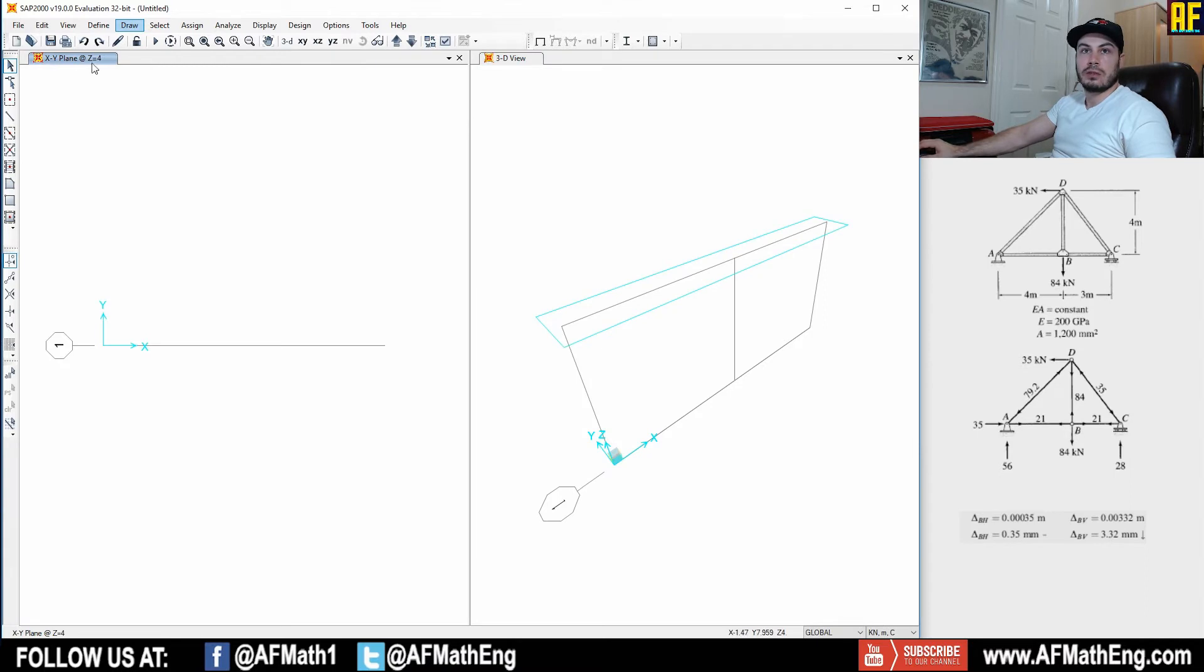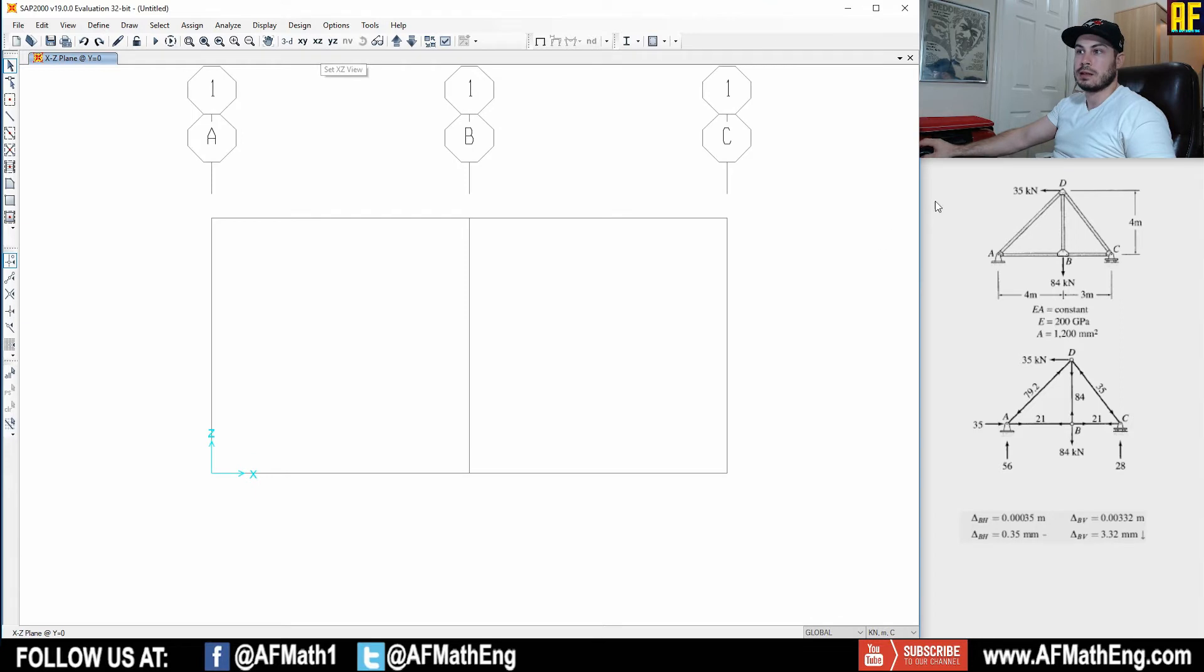And once again, we have our x, y plane and our 3D view. So let's get out of the 3D view and go to the x, z plane because that's how it looks on the page. And as you can see here, we have four meters and four meters here. And that's not what we want. So we have, if you take a look at the bottom down here, that'll show you that we have x equals four and x equals eight. But we want x equals seven, right? Because it's four and three. So just right click on the screen and click edit grid data.